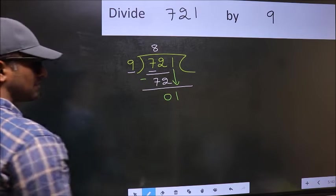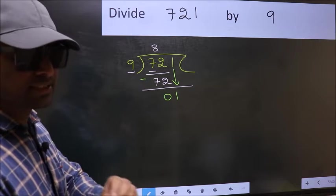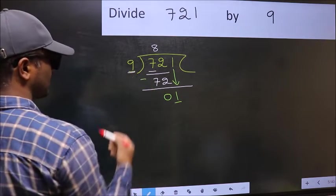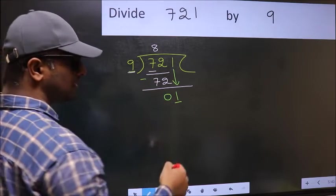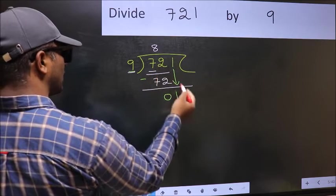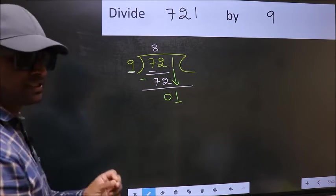After this step, the mistake happens. And the mistake is this: here we have 1 and here 9. 1 is smaller than 9, so what many do is they directly put dot and take 0, which is wrong.